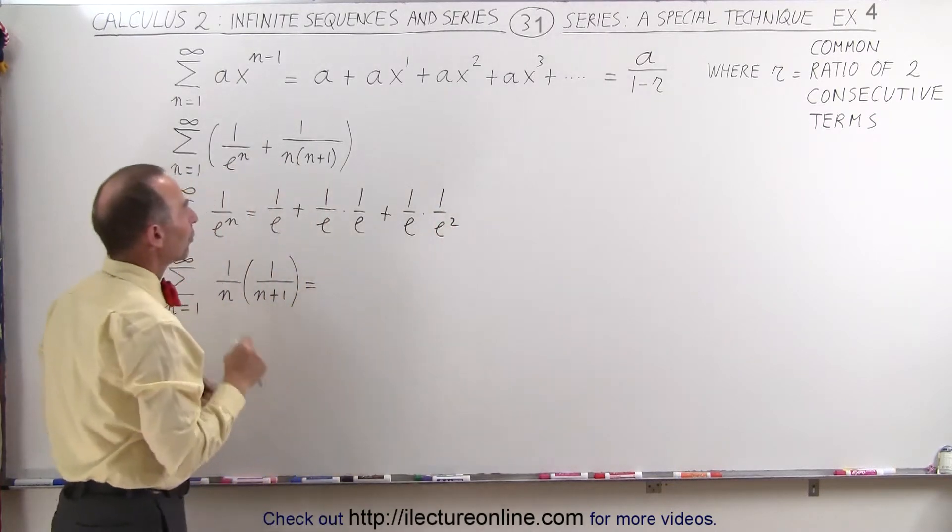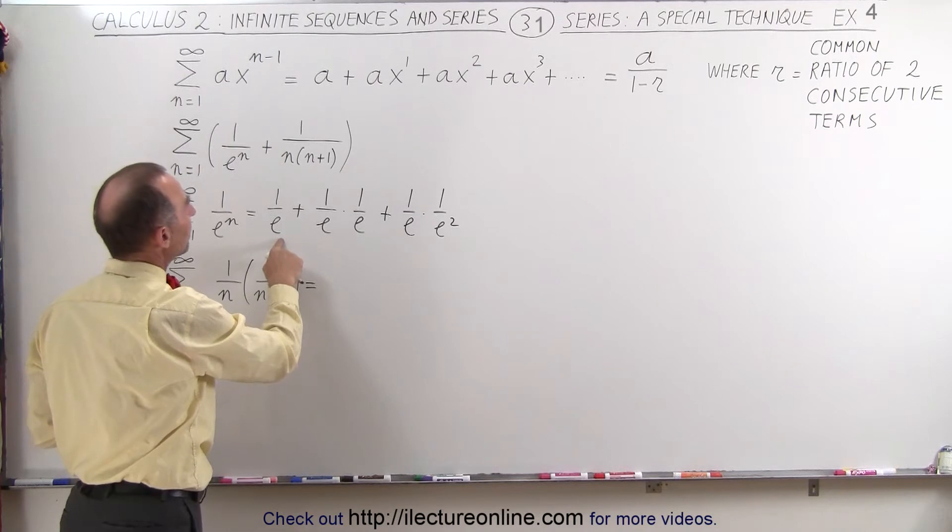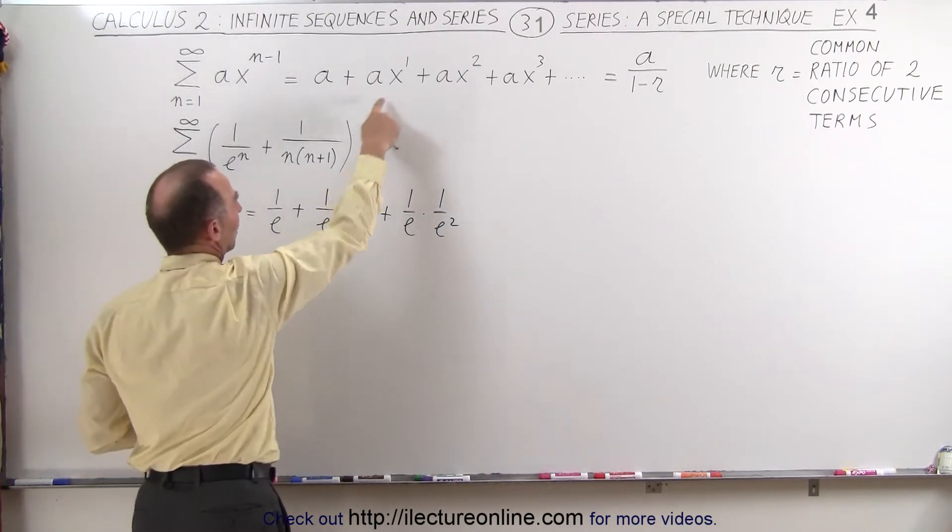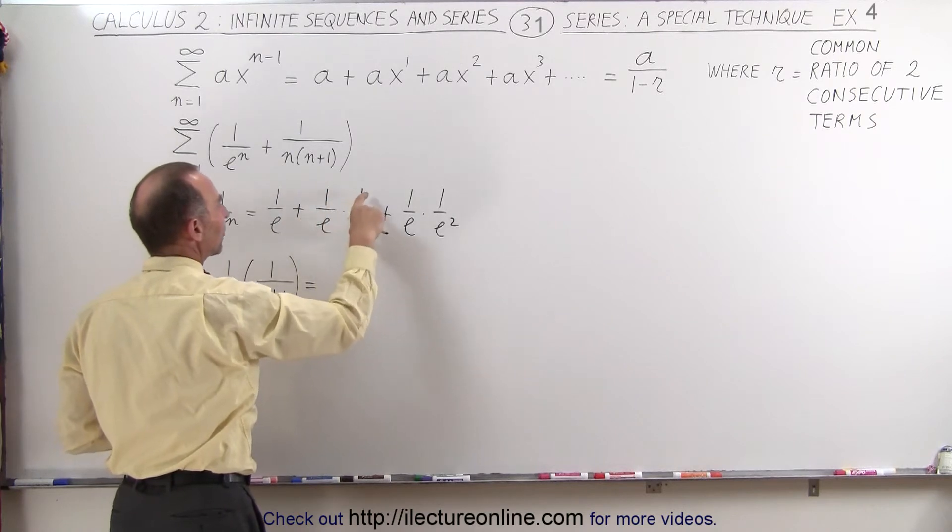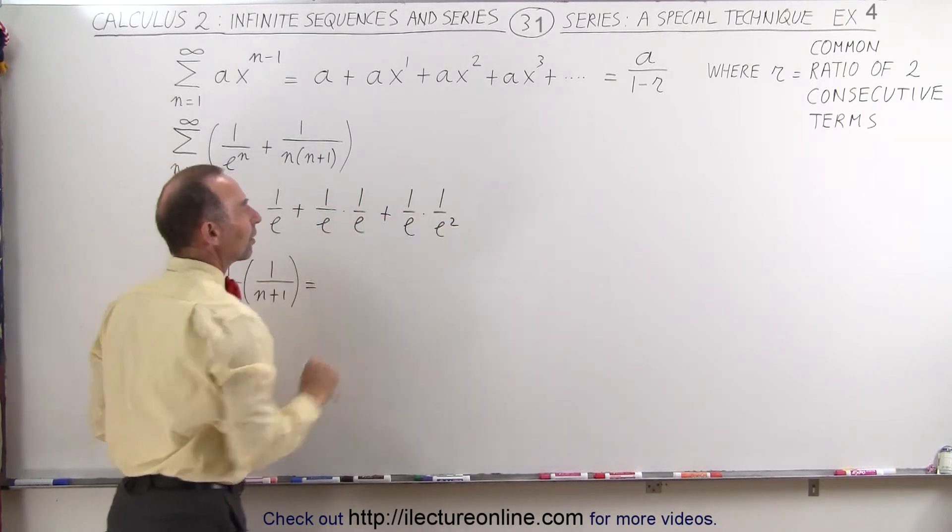And then we begin to realize that if we let a be 1 over e and x be 1 over e, then this becomes a plus a times x plus a times x squared and so forth.